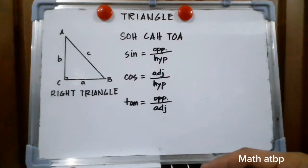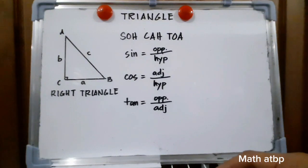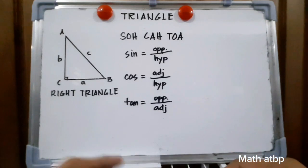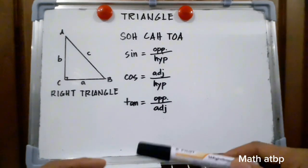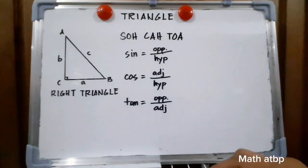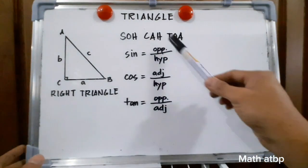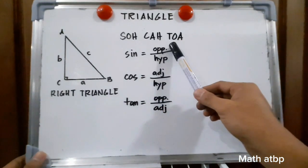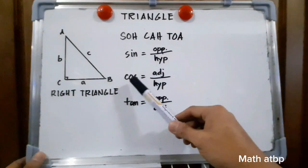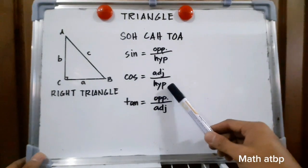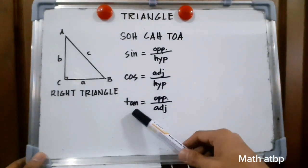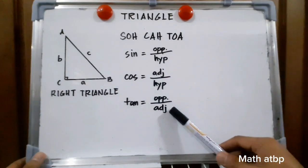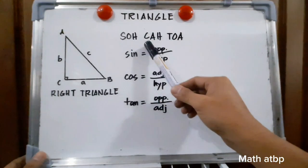The Pythagorean theorem can only be used if there are two sides given. But what if there is only one side given and an angle? That is the limitation of the Pythagorean theorem. If the given is an angle and a side, then we'll be using SOH-CAH-TOA. SOH-CAH-TOA means the sine of an angle is equal to the opposite over the hypotenuse, the cosine of an angle is equal to the adjacent over the hypotenuse, and the tangent of an angle is equal to opposite over the adjacent side.